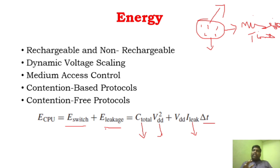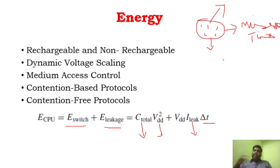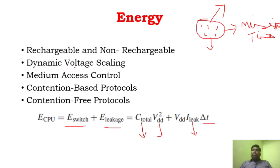Leakage energy is the amount of energy that is wasted. There are techniques that have evolved to reduce leakage energy. Every sensor node can switch off its radio whenever it is not transmitting any information or whenever it is not active — it can turn off itself to preserve some energy. There are also software techniques such as dynamic voltage scaling, which will also reduce energy consumption.